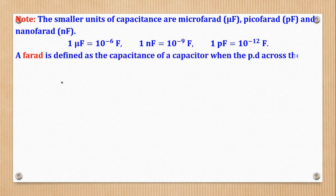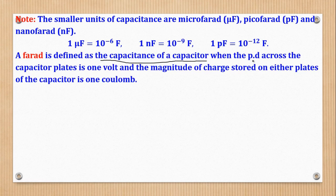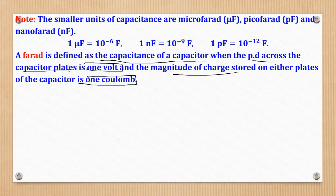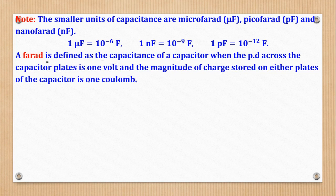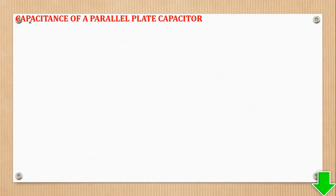Now what is a farad? So by definition, a farad is the capacitance of a capacitor when the PD across the capacitor plates is 1 volt, and the magnitude of charge stored on either plate is also 1 coulomb. So PD should be 1 volt and charge should be 1 coulomb. That would be a farad.